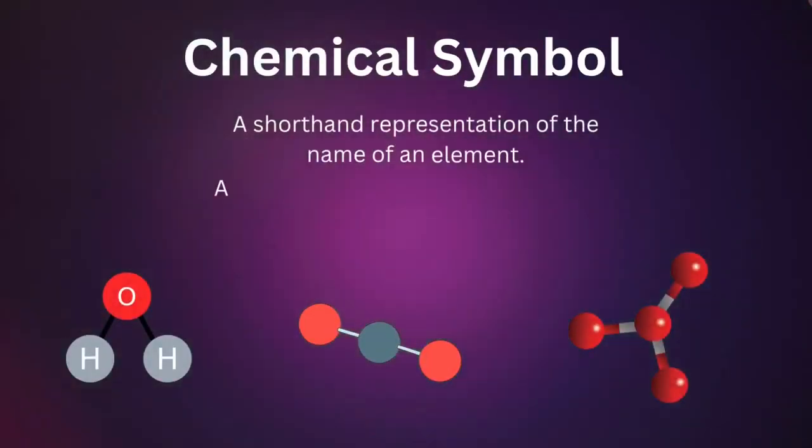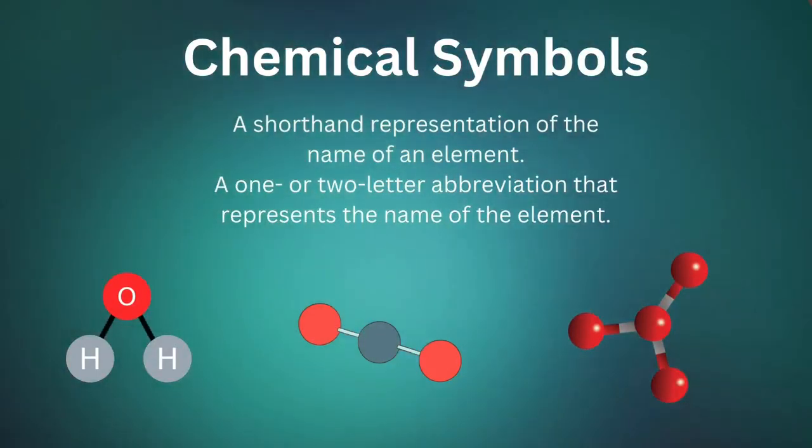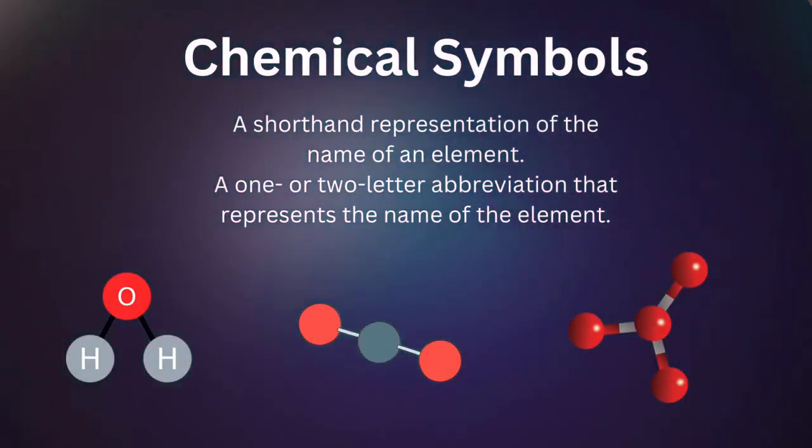Let's start with the basics. A chemical symbol is a shorthand representation of the name of an element. It is a one or two letter abbreviation that represents the name of the element.